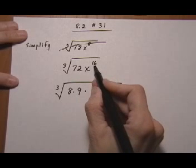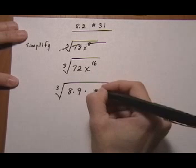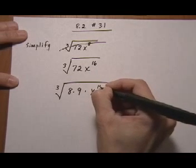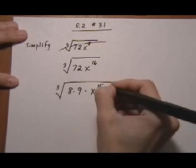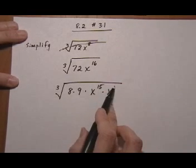Times, the highest power here that would be divisible by 3. Let's see, 12 divided by 3 is 4, 15 divided by 3 is 5, 15 is closer to 16. So I'm going to take x to the 15th with one left over of x because 15 plus 1 gives me 16.